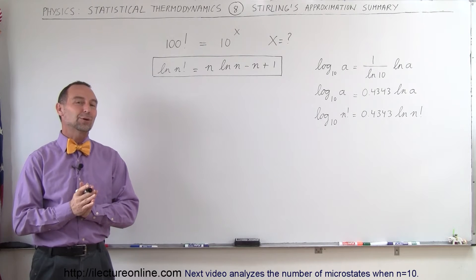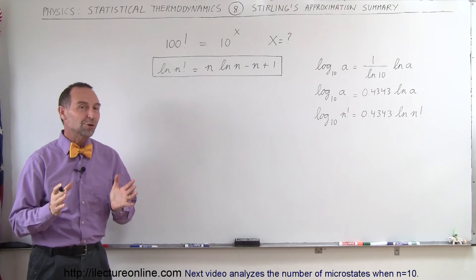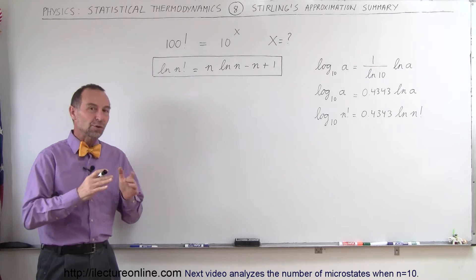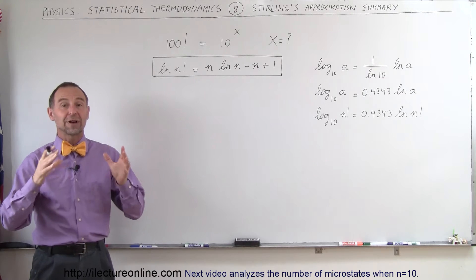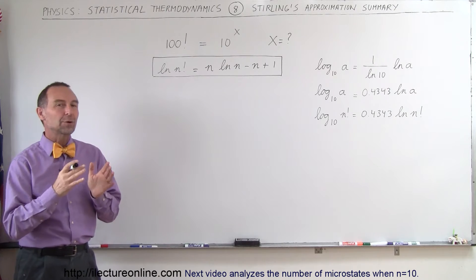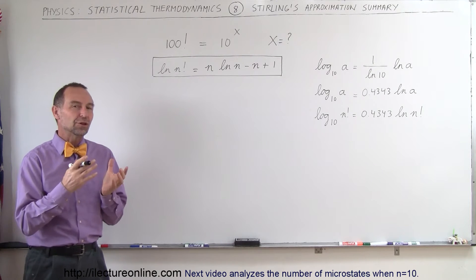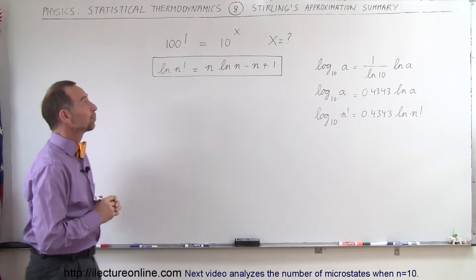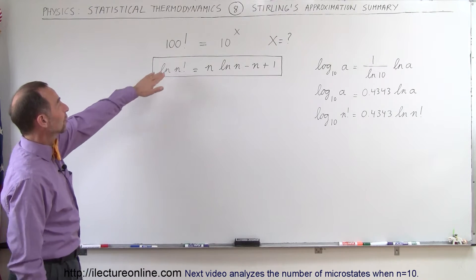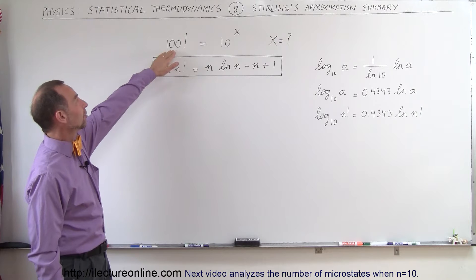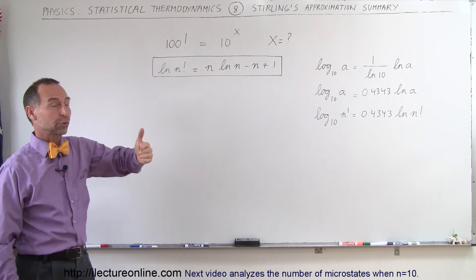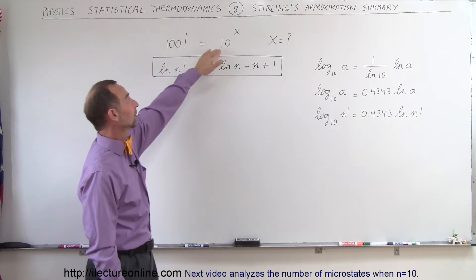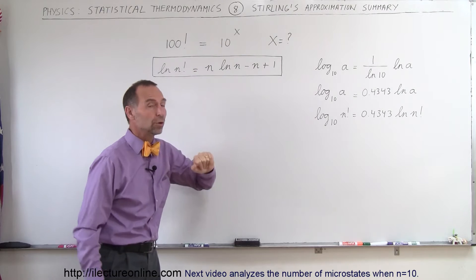Welcome to ElectronLine and we're going to do another video on Stirling's approximation. In the previous video we saw how it was defined and how it was derived. Now we're going to simply use it in a way that it's easy to understand. What we're trying to do here is find a way to express a very large factorial, like 100 factorial, in terms of 10 to some exponent.